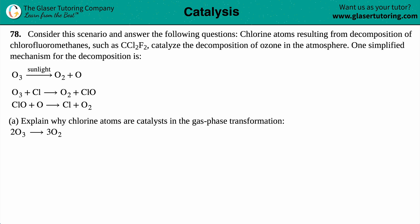We know that it's a mechanism because a mechanism is like a recipe where they give you the individual steps. So this is a three-step process. For letter A, it says: explain why the chlorine atoms are catalysts in the gas phase transformation of 2O₃ yields 3O₂. So we need to explain why the chlorine atoms are acting as the catalysts. In our mechanism, the chlorine atoms are just Cl.